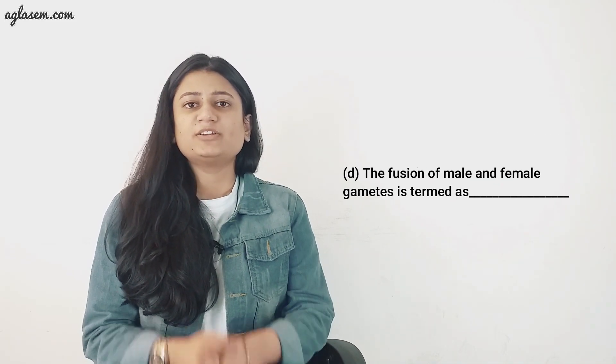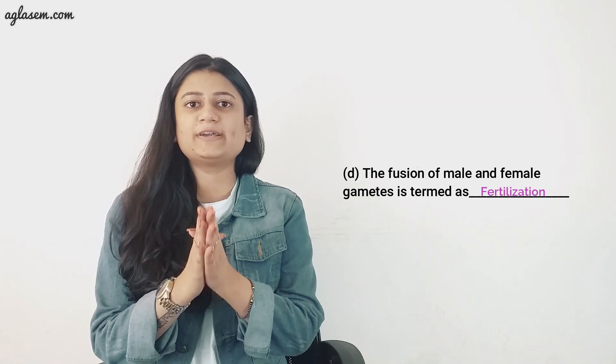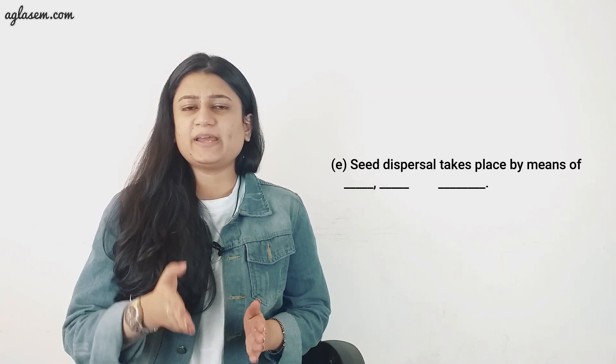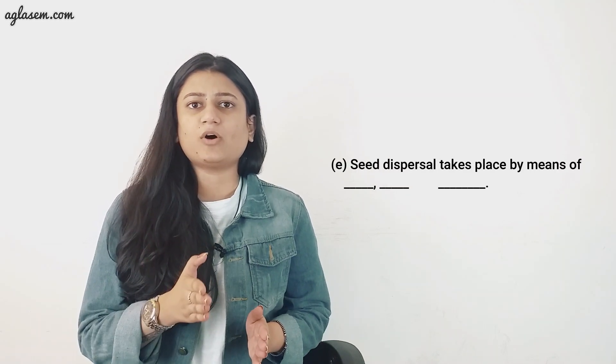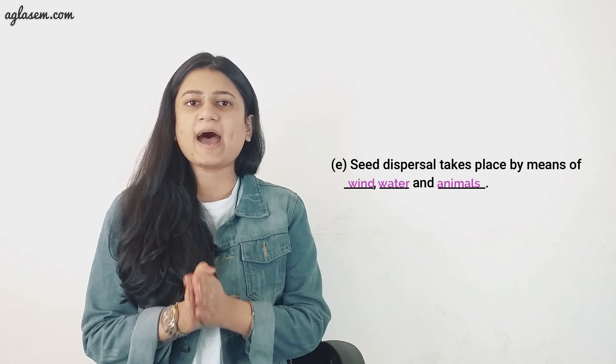Part d: The fusion of male and female gametes is termed as blank. Answer: fertilization. Part e: Seed dispersal takes place by means of blank. Answer: wind, water, and animals.